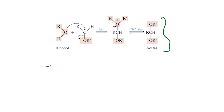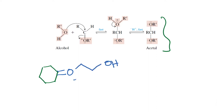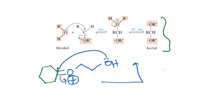Drawing the last step with cyclohexanone and ethylene glycol, you get the intermediate –C(OCH₂CH₂OH)– with cyclohexane ring. The remaining steps are the same: this undergoes an intramolecular attack and eventually gives the cyclic acetal product.